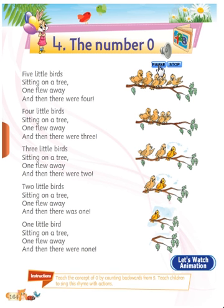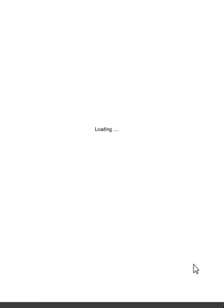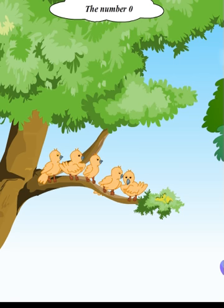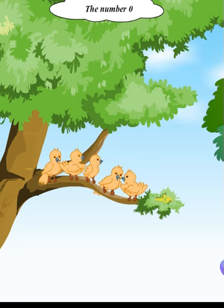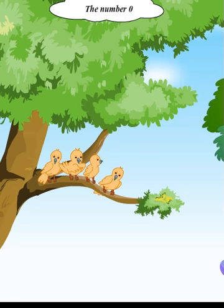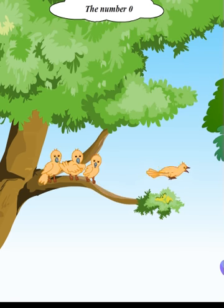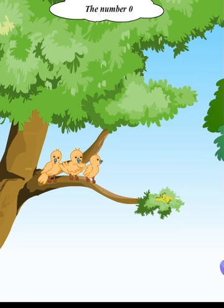I hope you understand. Now we can go to the next picture. Five little birds sitting on a tree, one flew away and then there were four. Four little birds sitting on a tree, one flew away and then there were three.